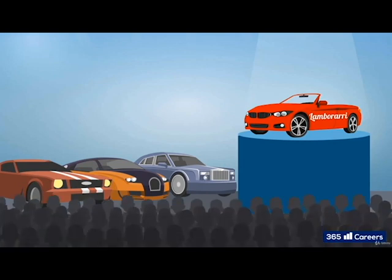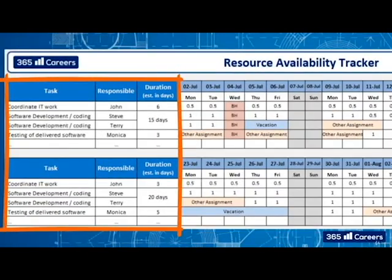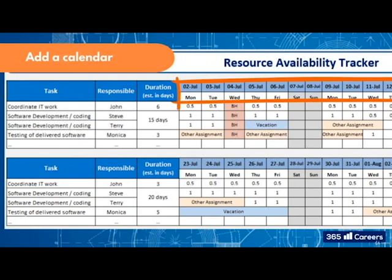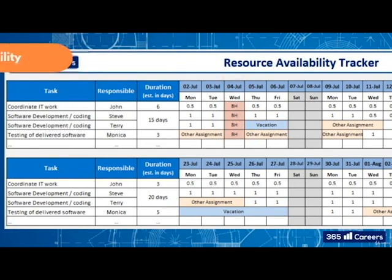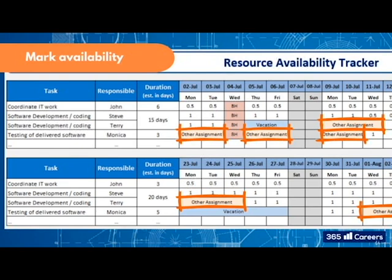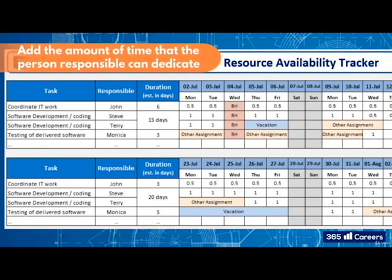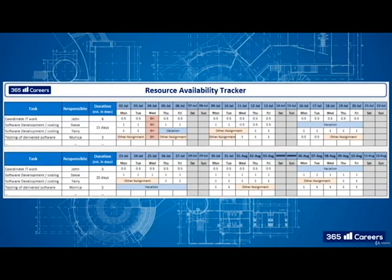Let's go back to the showroom example and zoom in to the workstream for the development of the software for the interactive displays. First, we add columns for the name of the task, the person responsible and the expected duration. Then, we add a calendar with the month and weekdays. Do not forget to check for holidays and mark them — for example, in the US, the 4th of July is a national holiday. After that, we can mark the days or weeks when the person is not available to work on the project tasks. For an extra level of detail, you can add the amount of time that the person responsible can dedicate to the project tasks in each cell. This is quite similar to our favourite, the Gantt chart.